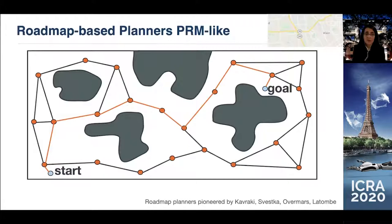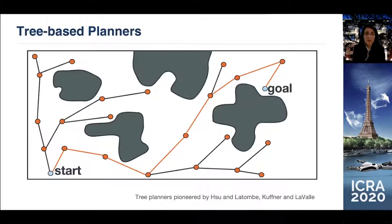It was a very simple idea that has stood the test of time. The idea was: select samples — configurations of the robot in configuration space — and connect the samples with short local paths. Do this many, many times, obtain a lot of connections, and find the connectivity of the configuration space, creating a roadmap. When you have a start and a goal, connect them to the roadmap and use it like a map to get from start to goal. After roadmap-based planners, we saw the growth of tree-based planners, where you can reach the goal much faster by cleverly growing a tree in configuration space.